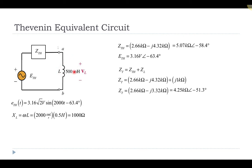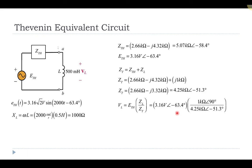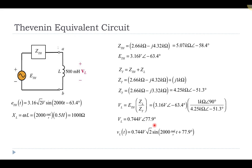With the total impedance found, we determine the voltage across the inductor using the voltage divider rule. The voltage across the inductor equals the Thévenin voltage times the inductive impedance over the total equivalent impedance: (3.16 ∠−63.4°) × (1 kΩ ∠90°) / (4.25 kΩ ∠−53.1°). Performing the phasor multiplication and division gives a voltage across the inductor of 0.744 V at a phase angle of approximately 79.9°. Converting back to the time domain, we multiply by √2 with angular frequency 2000 rad/s.